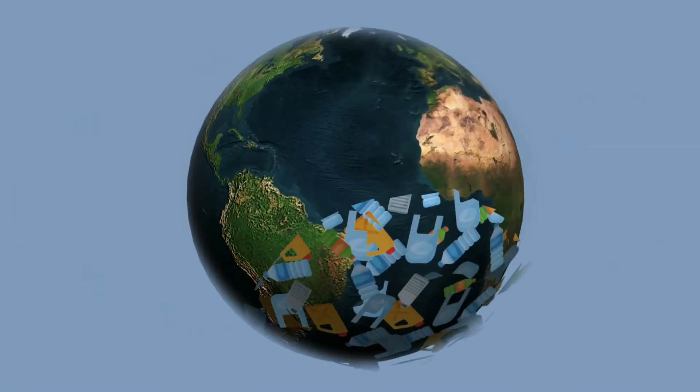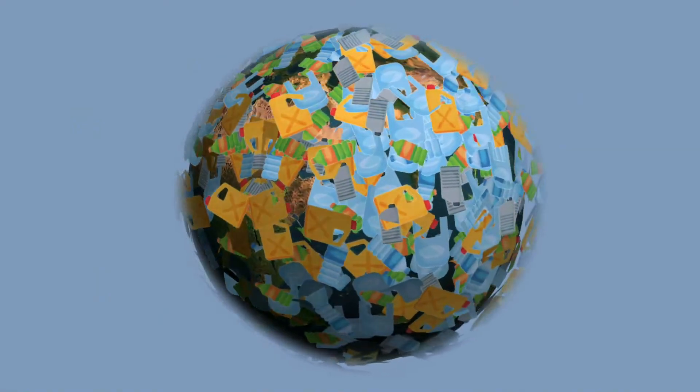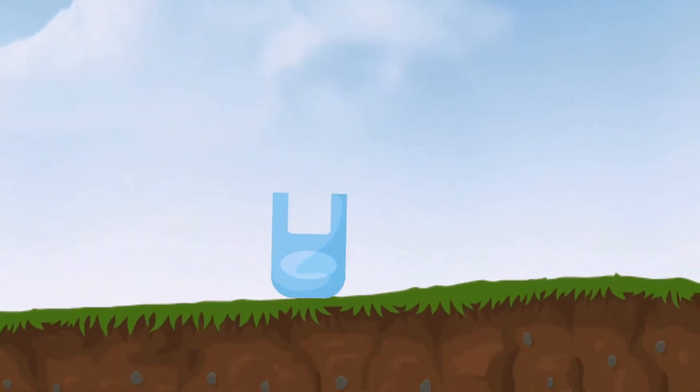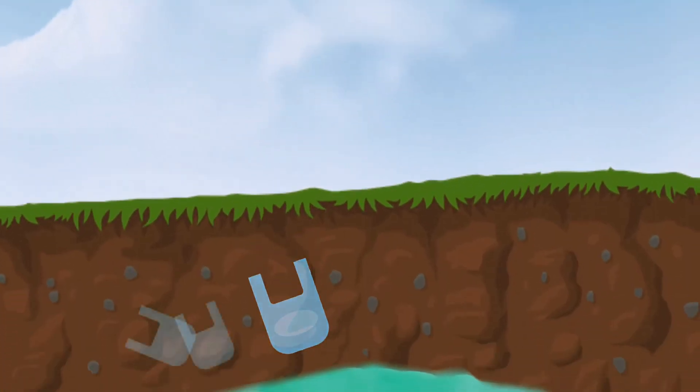Enough plastic is thrown away each year to circle the earth four times. Plastic bags tend to disrupt the environment in a serious way. They get into soil and slowly release toxic chemicals.